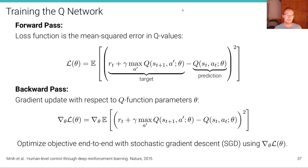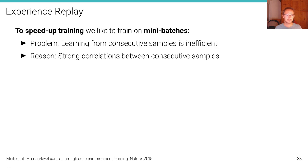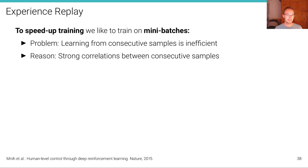Unfortunately, this leads to a very unstable optimization problem and it doesn't converge in practice. There are two things needed to solve this problem, described in the paper by Mnih et al., 'Human-Level Control Through Deep Reinforcement Learning,' published in Nature 2015. The first thing is experience replay, and the second is that we don't update the Q-networks as fast — we include a little delay in these updates.